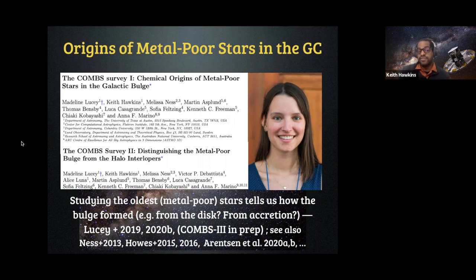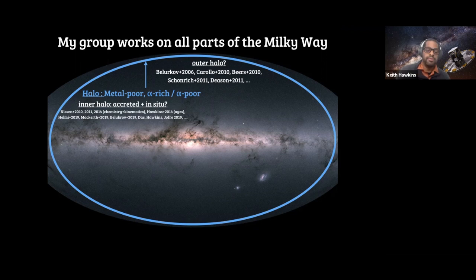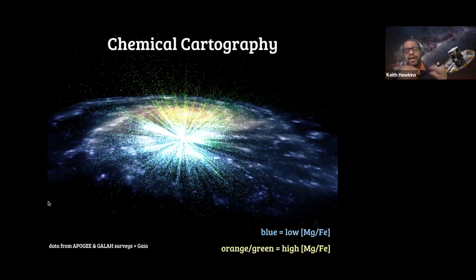My group is also working in the stellar halo — primarily interested in the nature of the large massive system that accreted onto the Milky Way, the Gaia-Sausage-Enceladus system. We're trying to do a completely unbiased view of the stellar halo using the HETDEX low-resolution spectroscopic survey, which I'll talk about at the Bacall lunch. The final thing I want to end with is where I think galactic archaeology is going: I think the next real step is doing really detailed chemical cartography work — essentially map-making — to piece together the structure of the galaxy.